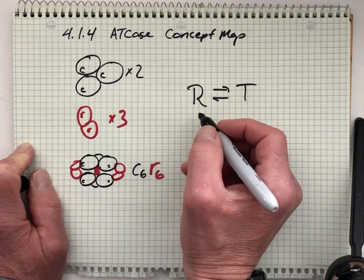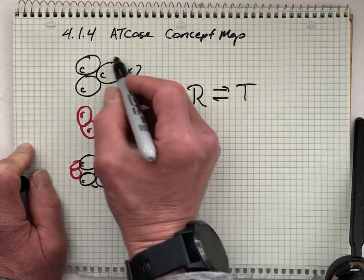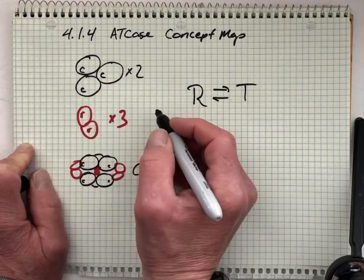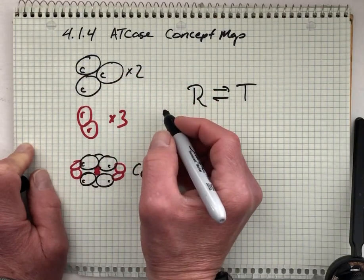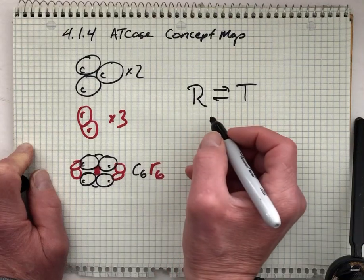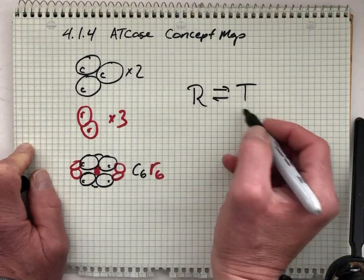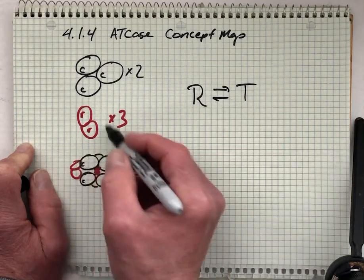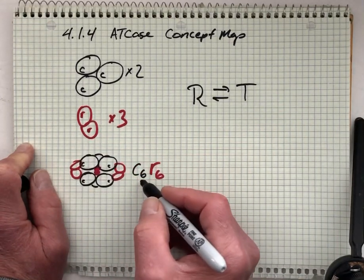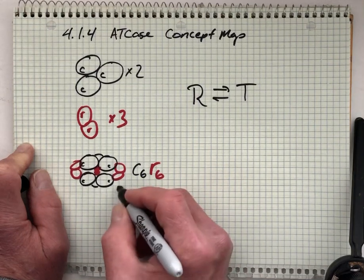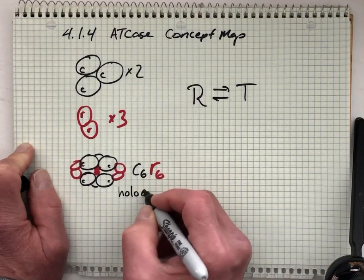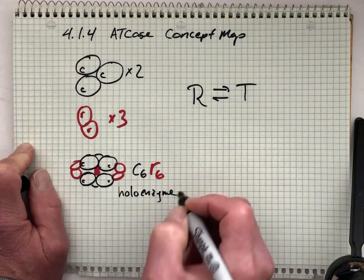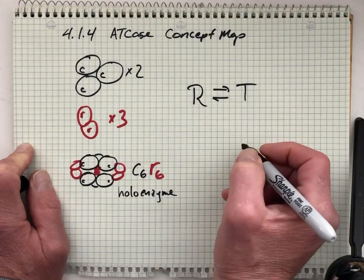The R form of the enzyme you can associate with just the isolated catalytic trimers which are possible to isolate in the laboratory. The tense form is favored when you have the regulatory subunits and you've assembled this C6R6 holoenzyme until you start adding substrate.